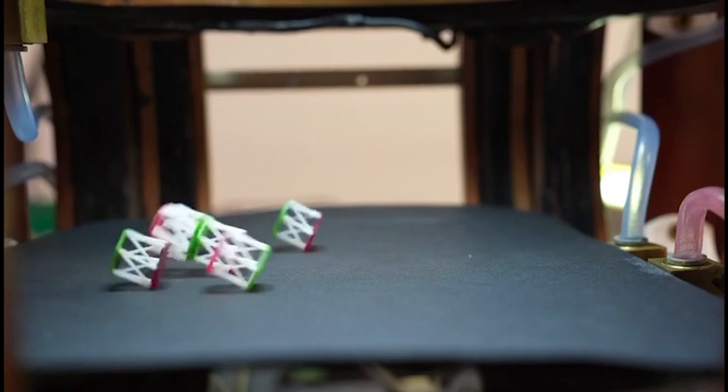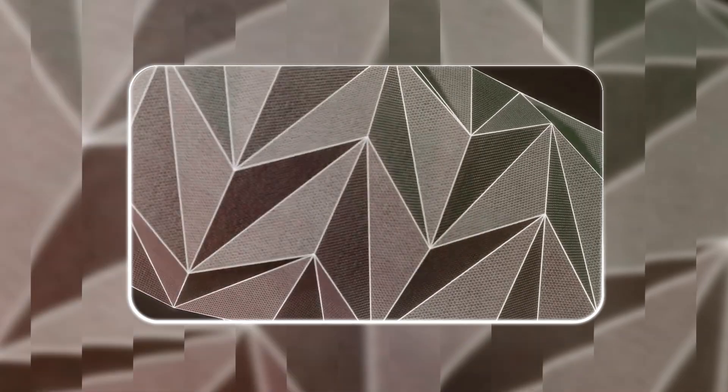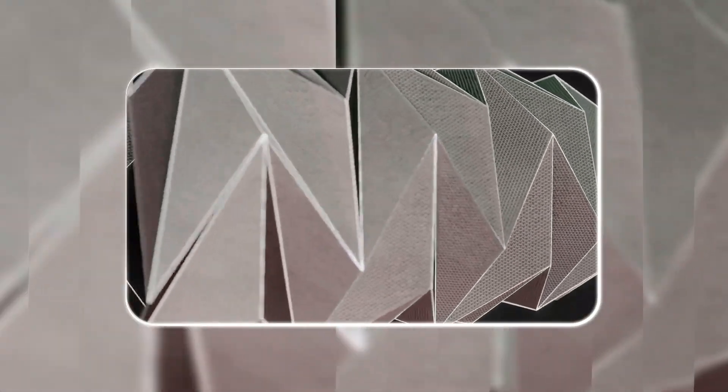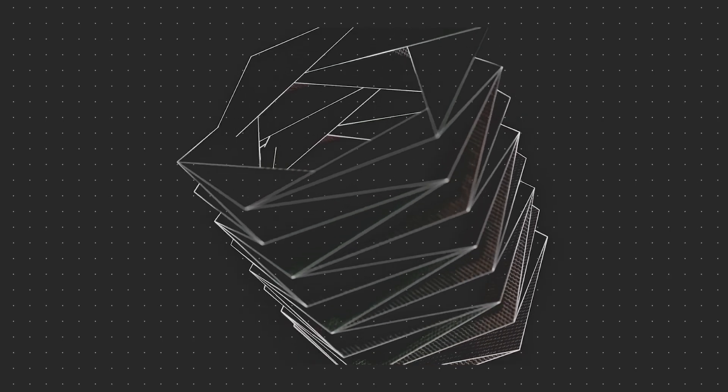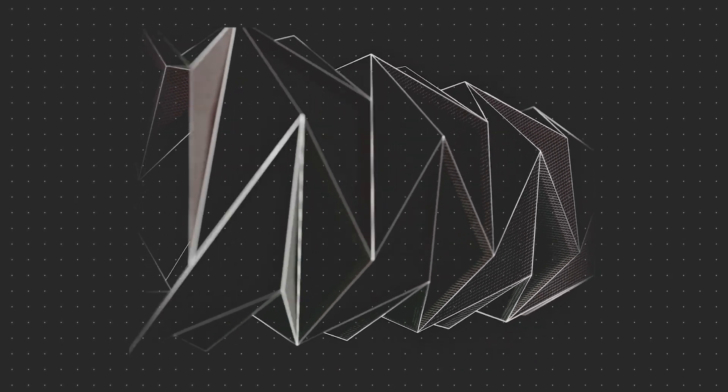So how does this strange little shape-shifting cube actually work? At the heart of this machine are two Kresling units. They look like tiny accordion towers. Hollow cylinders made of repeating triangles that can twist, collapse, and spring back into shape.